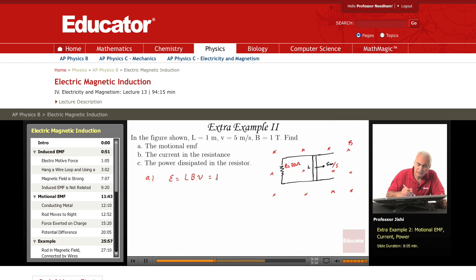L is 1 meter, B is 1 Tesla, and V is 5 meters per second. So we end up with 5 volts. The EMF is measured in volts.